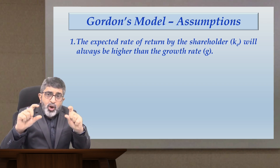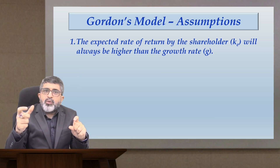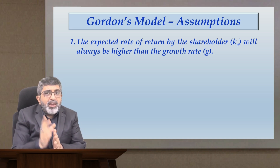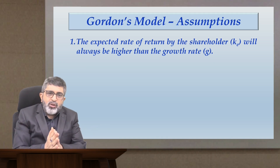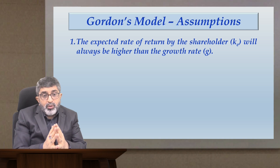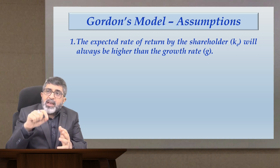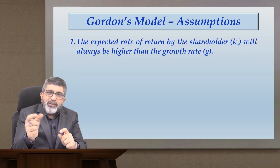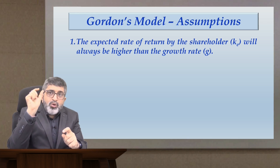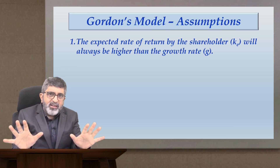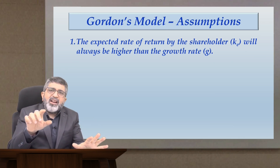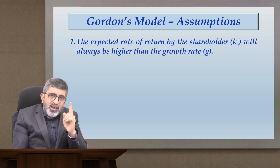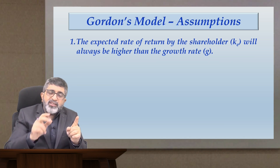Use your simple common sense: you are taking the denominator as ke minus g. Imagine what would happen if ke and g are both the same — ke minus g becomes zero. You cannot determine the value of the stock when the denominator is zero. On the other side, imagine if the growth rate is greater than ke — ke minus g will become a negative value. So to give Gordon's model complete realism, there are certain assumptions backing it.